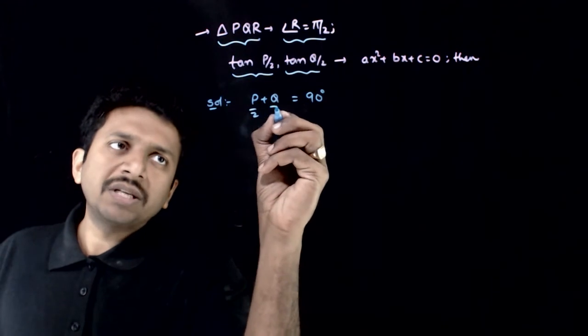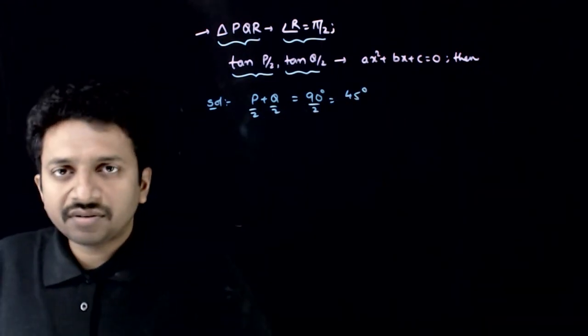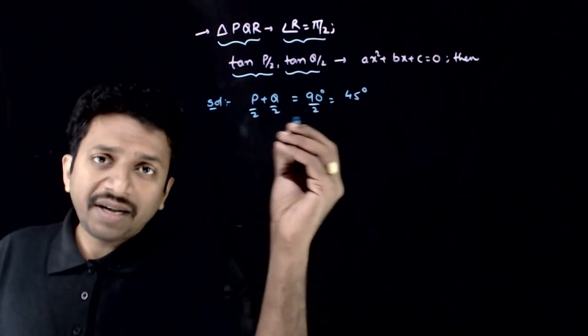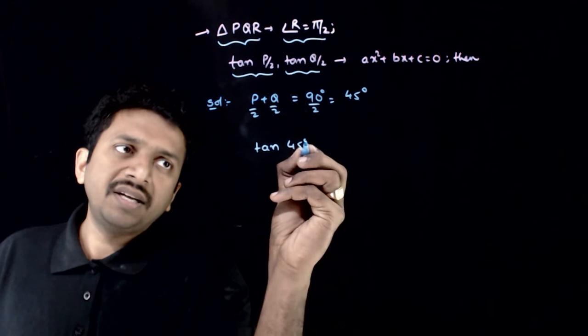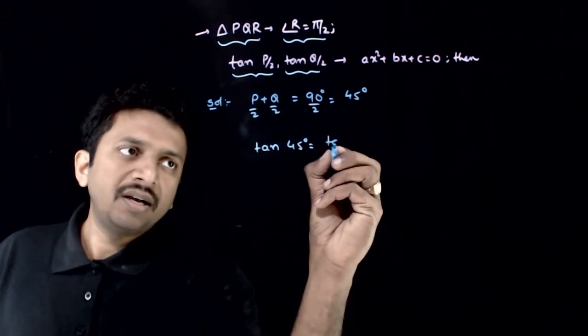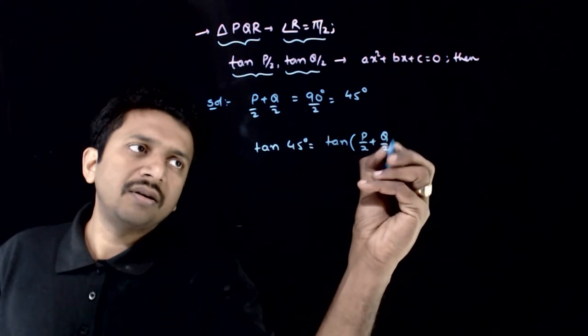So, P by 2 plus Q by 2 has to be equal to 90 by 2, 45 degrees. So if I apply tan on both sides, tan 45 degrees has to be equal to tan of P by 2 plus Q by 2.